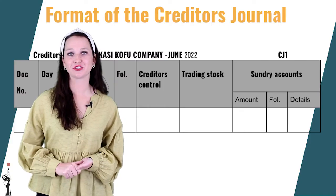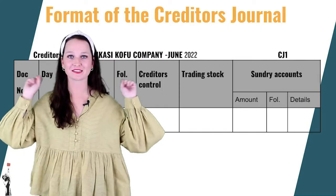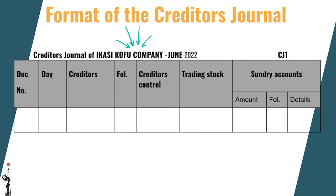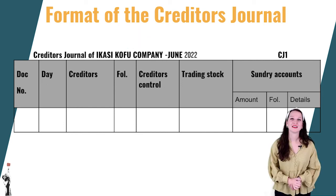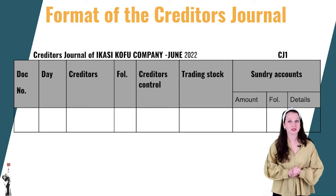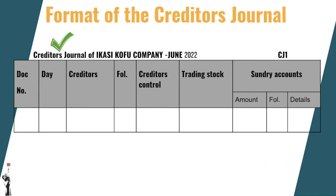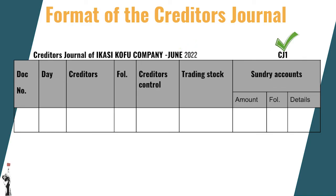Let's set up the creditor's journal, or CJ. The heading is a very important part. The following things must be in the heading: the name of the journal — in this case, the CJ — the name of the business, which in this example is Ikasi Coffee Company, the month and the year, as well as the folio number. Your first journal when starting a business will be CJ1, the next month will be CJ2, and so forth.